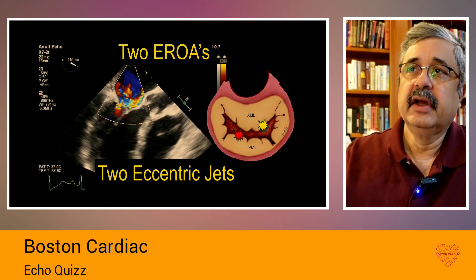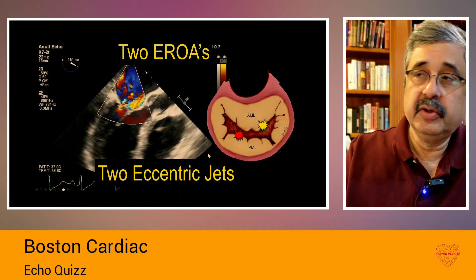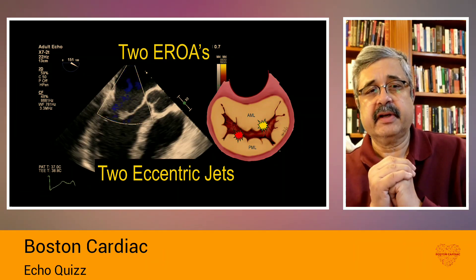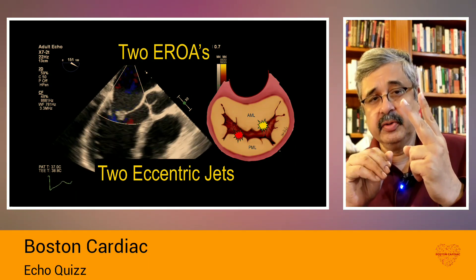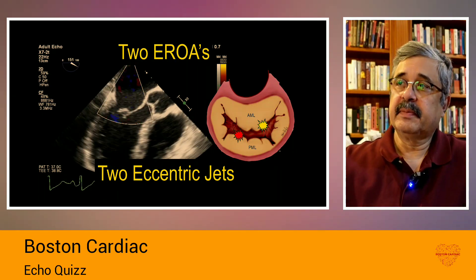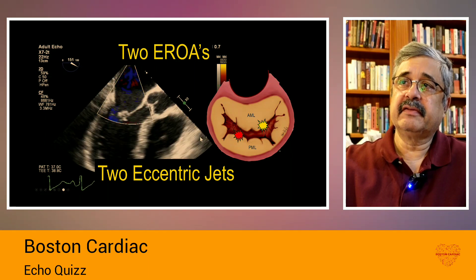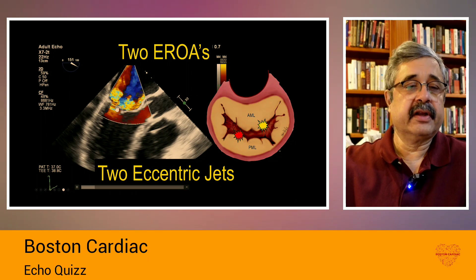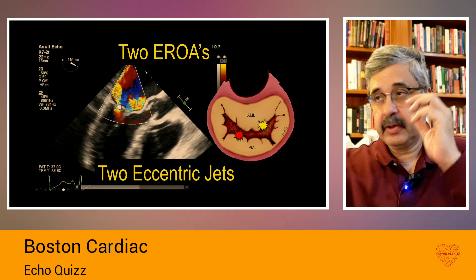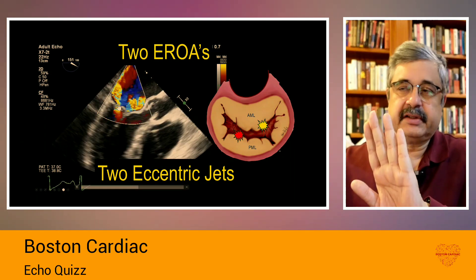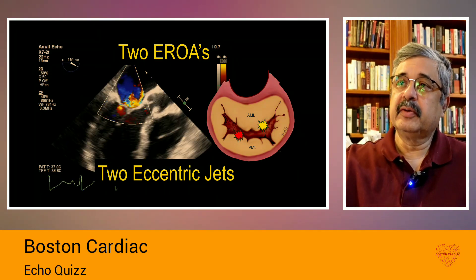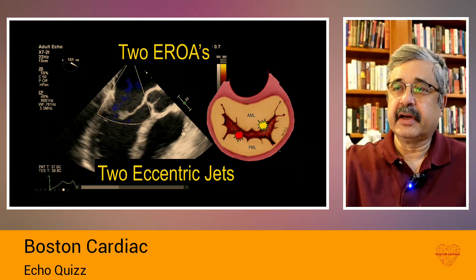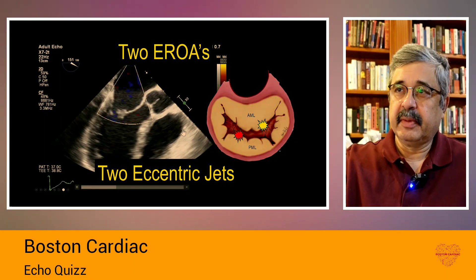I'll show you a few more examples. In this specific case, there are two regurgitant jets. The key point is that two regurgitant jets going in opposite directions implies two effective regurgitant orifice areas — a problem with the posterior mitral leaflet leading to an anteriorly directed jet, and a problem with the anterior leaflet leading to a posteriorly directed jet. Both could be in the same plane, but you may need to look at two different axial planes to fully diagnose divergent mitral regurgitation jets.